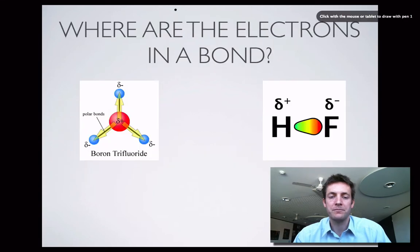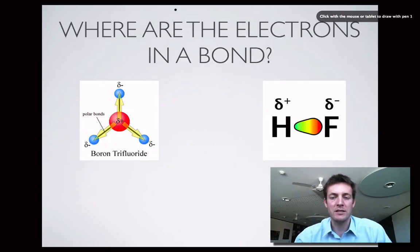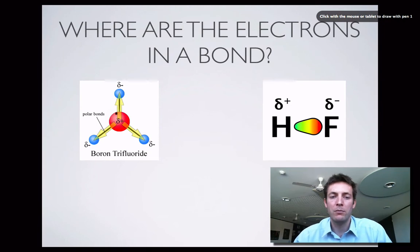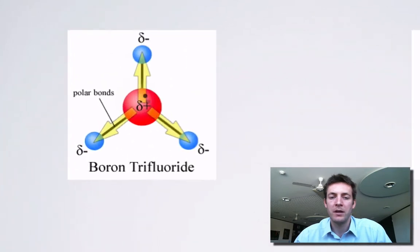When we're thinking about what polarity is, the first question we need to ask ourselves is where the electrons in a bond are. Are they exactly in the middle of a covalent bond, or are they more towards one atom or the other? Here's a diagram of boron trifluoride.